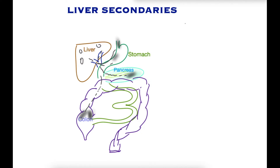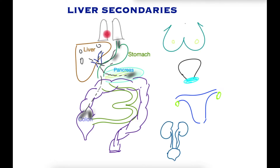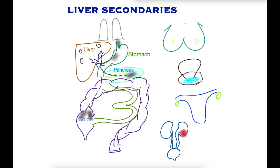The liver unfortunately is also a favorite destination for cancers arising in other sites such as the lungs, the breasts, the prostate gland in males, the ovaries and the uterus in females, and the kidneys and urinary tract including the bladder.